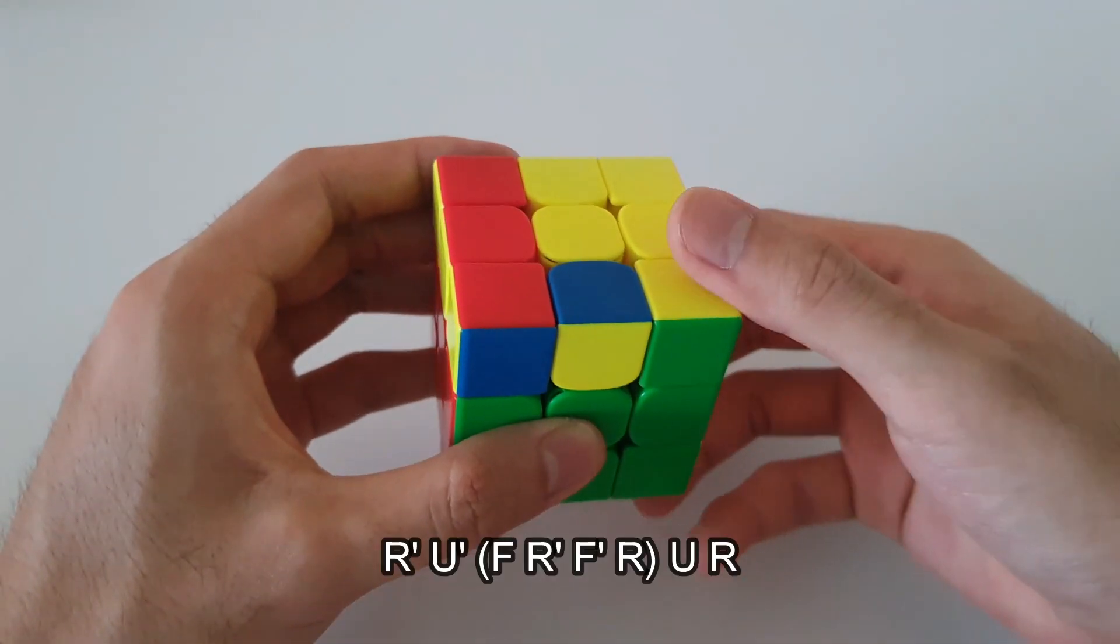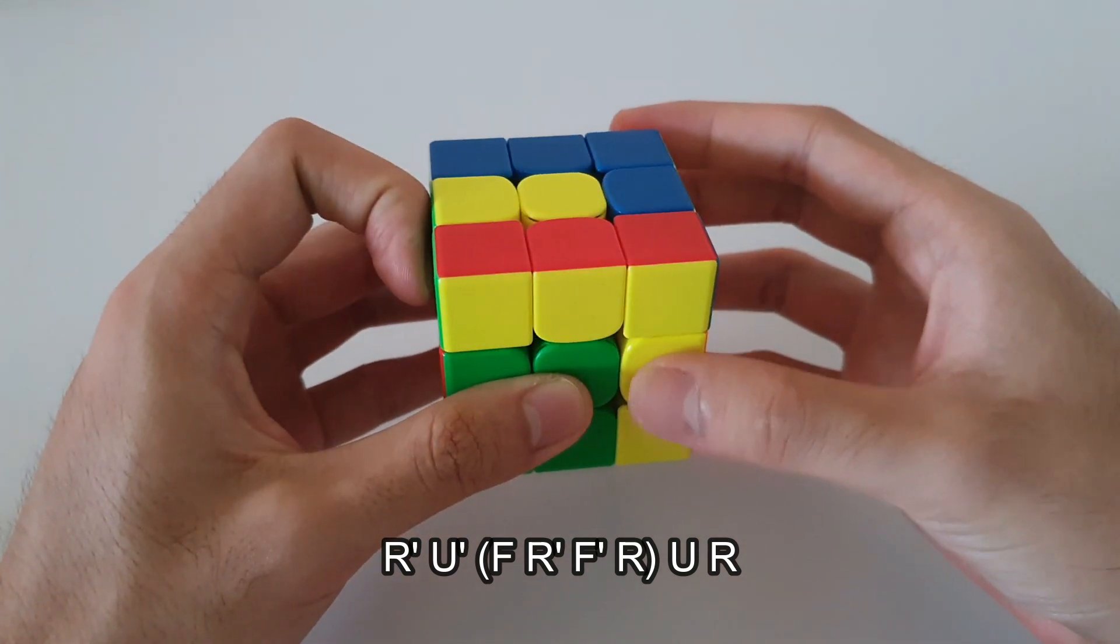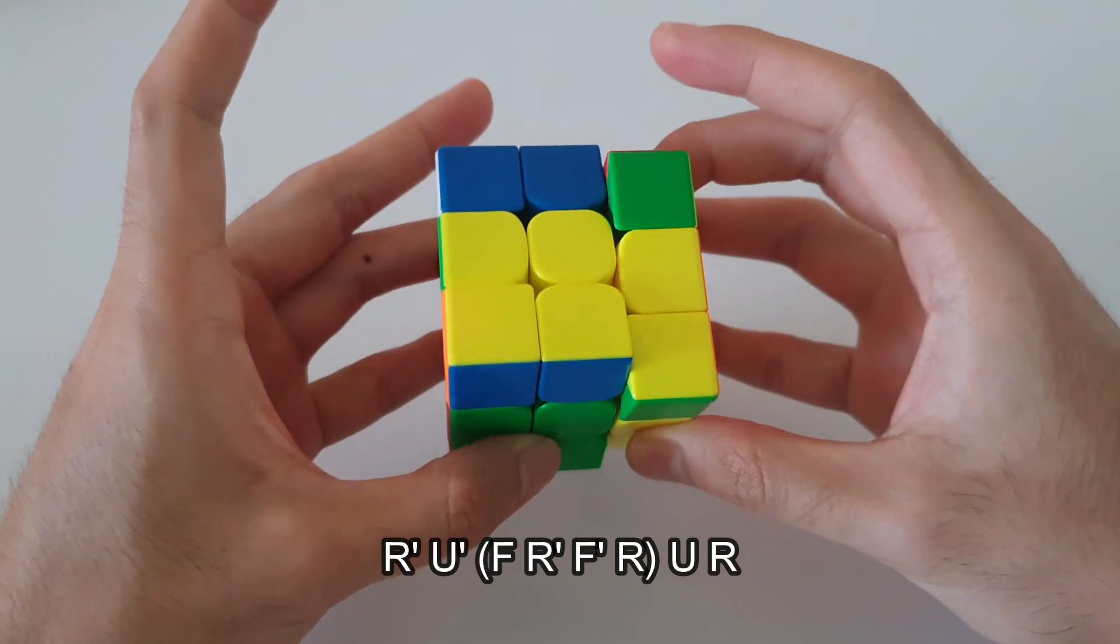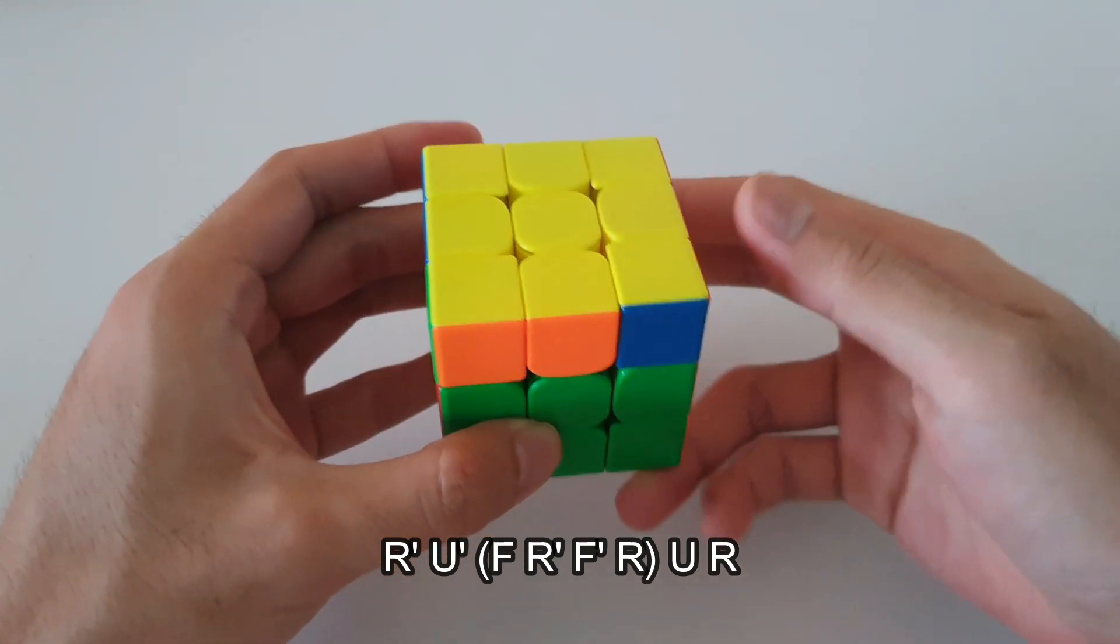So it actually starts off like this, so R' U' followed by an inverse sledge on the front right corner. And then you undo the setup moves with U followed by R.